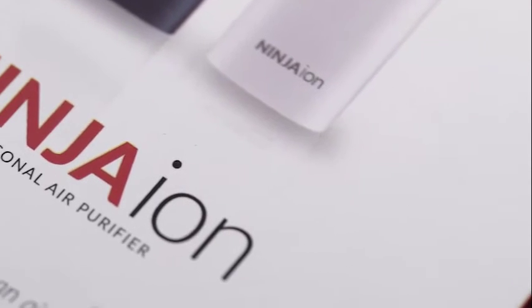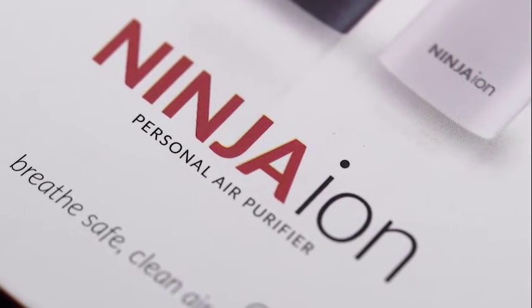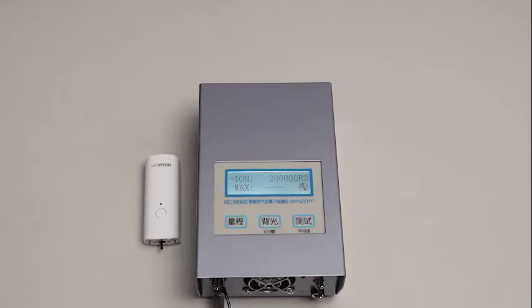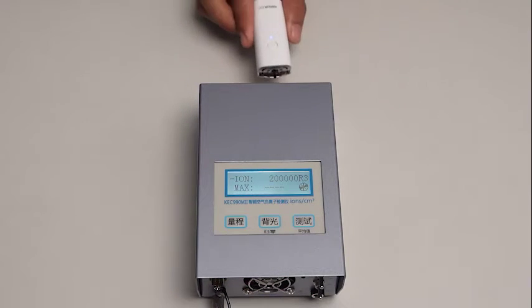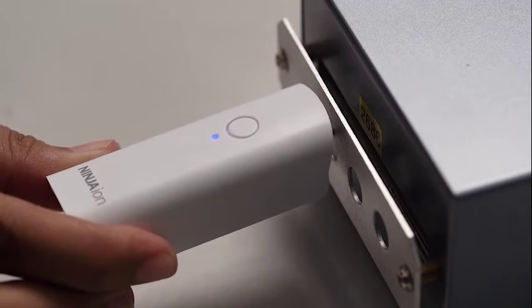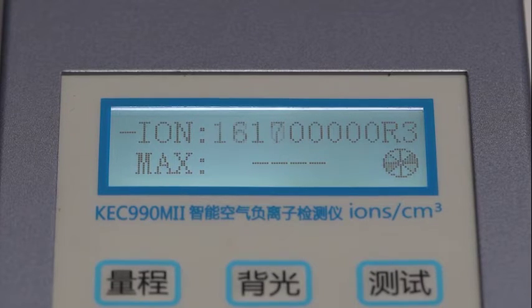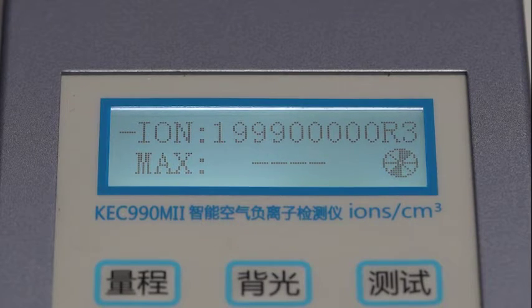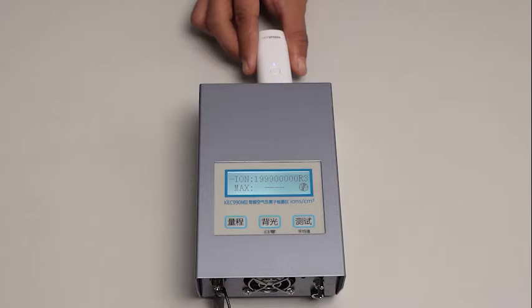Now, to show everyone how effective Ninja Ion is, we have conducted a test that counts the amount of ions Ninja Ion has. As you can see, the tester shows that the Ninja Ion leads the industry with nearly 200 million anions. Disclaimer. The tester used during the experiment has a maximum capability of counting up to 190 million anions only.